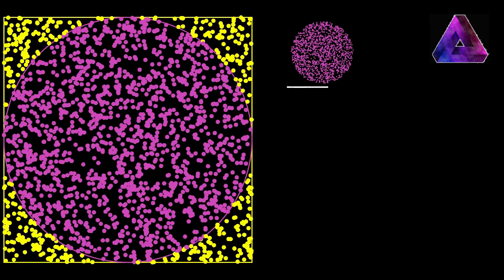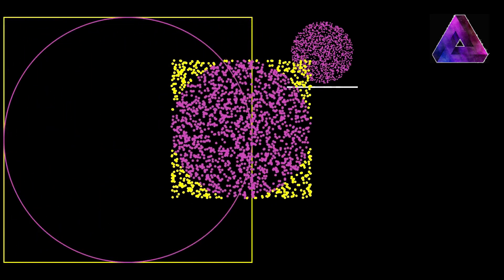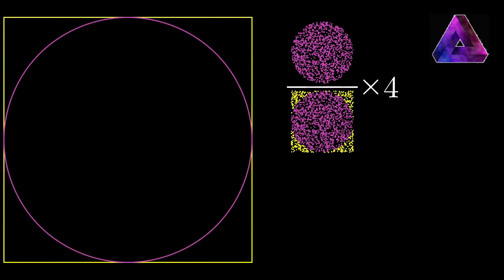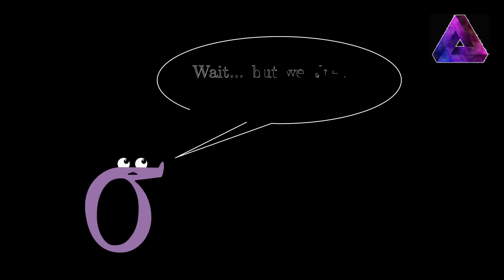Now let's up it to 2,000 dots just to see how close we can get. We've got the circle divided by the square, multiplied by 4, is about 3.13. So it looks like we're approaching pi.